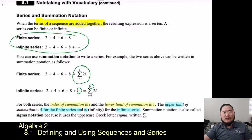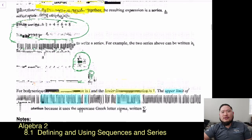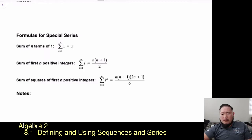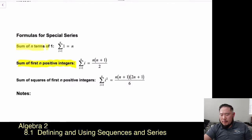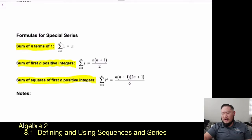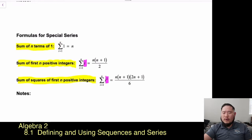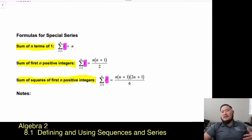We also have formulas for special series that you'll want to memorize. These include the sum of the first n positive integers, the sum of the squares of the first n positive integers, and one more. You use these specifically when the rule involves i, i², or 1. We'll discuss how to apply these sum formulas as we continue through Chapter 8.